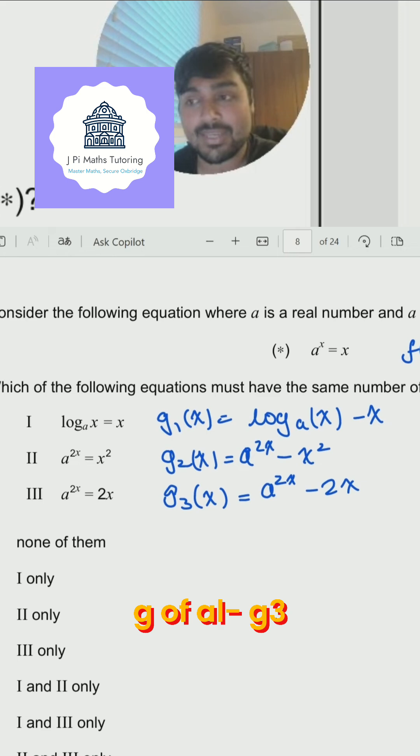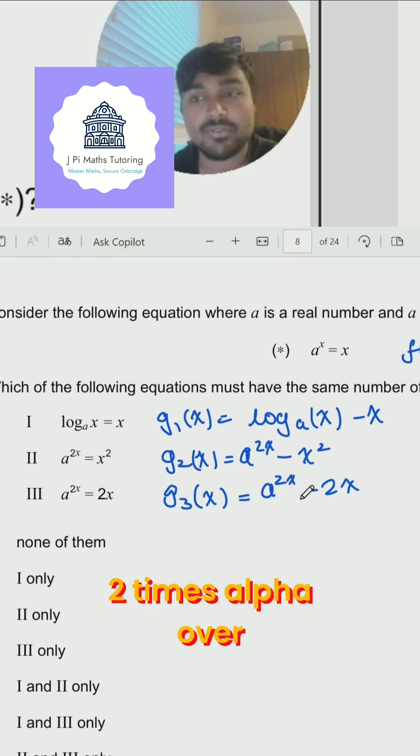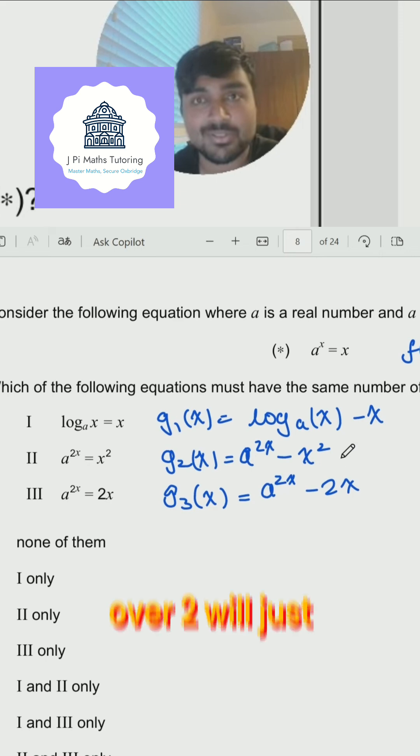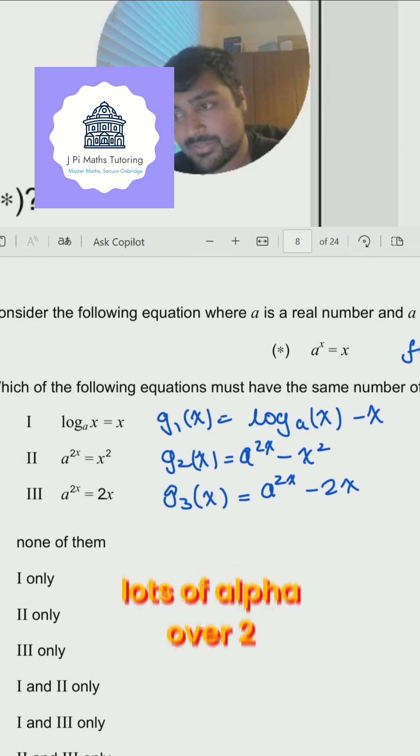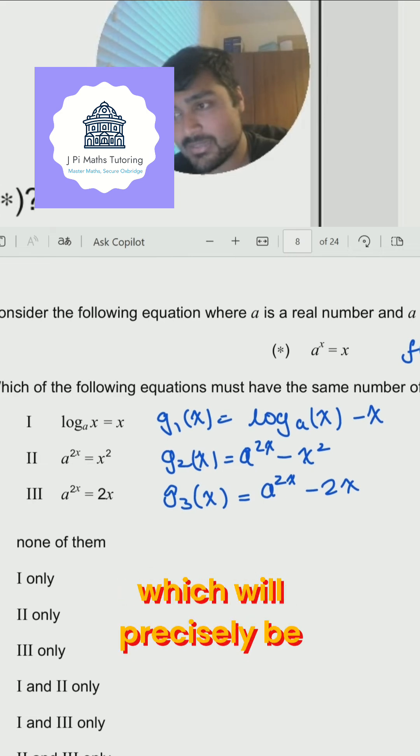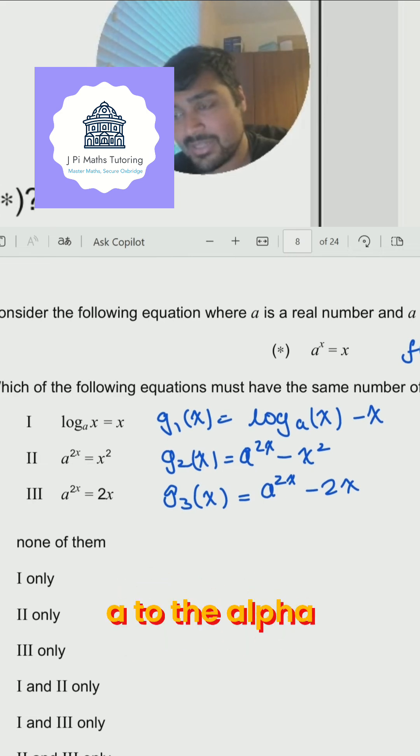Then that means that g of g3 of alpha over 2 will be 0 because a to the 2 times alpha over 2 minus 2 times alpha over 2 will just be. Well, let's just prove this: a to the 2 alpha over 2 minus 2 lots of alpha over 2, which will precisely be a to the alpha minus alpha, which is just f of alpha, which is 0.